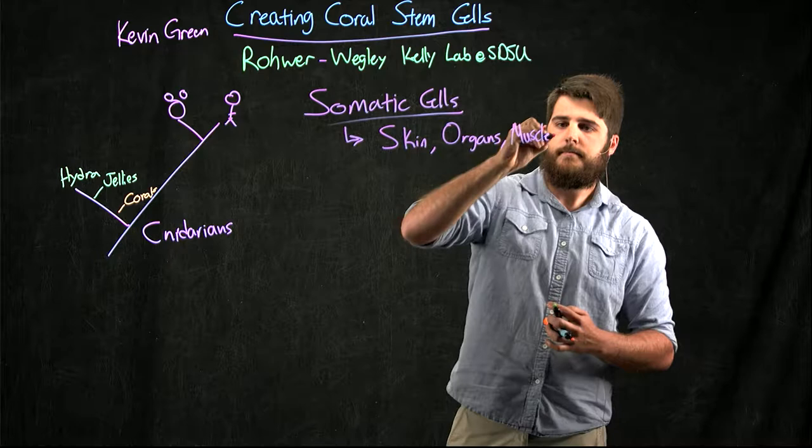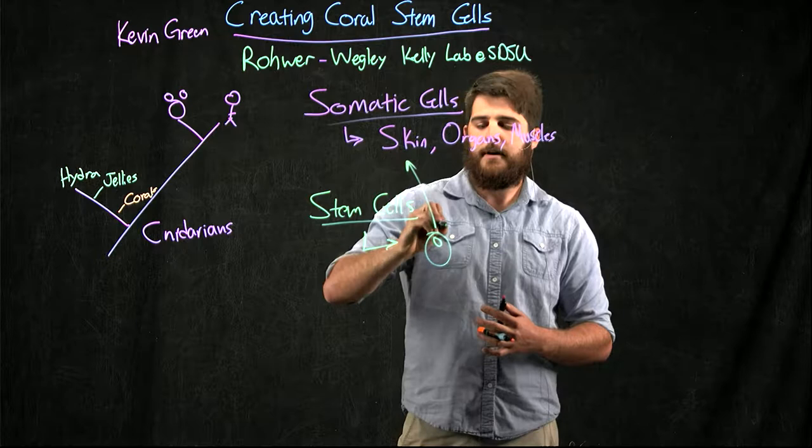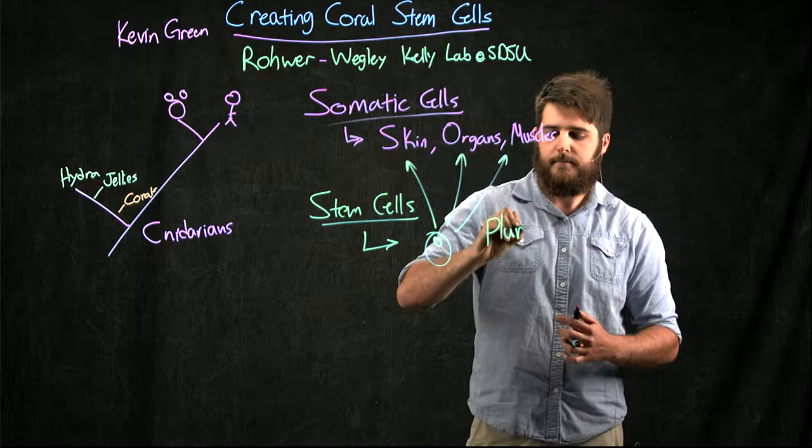You also have stem cells. These are cell types that can turn into any of these other ones, so either your skin, your muscles, or your organs, and these are termed pluripotent.